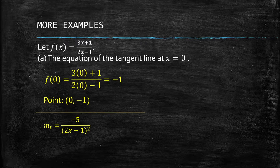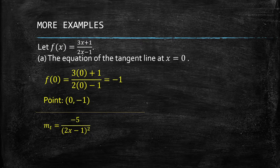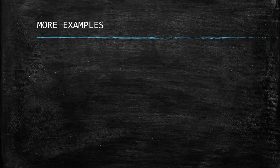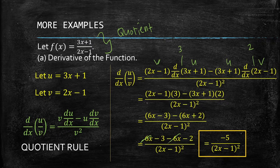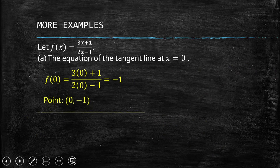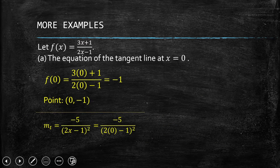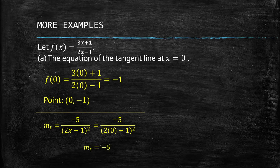Next, we need to find the slope of the tangent line. The slope of the tangent line is just the derivative evaluated at that point. We use the derivative of the function that we solved earlier, and we substitute x = 0. This gives us a slope of negative 5.